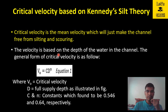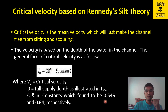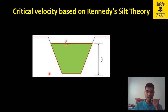The critical velocity is based on the depth of water in the channel. The general form of critical velocity is: V₀ = C × D^n, where C and N are constants found to be 0.546 and 0.64 respectively. These values are based on observations made over 20 years. D is the full supply depth, which is the depth of water in the canal.